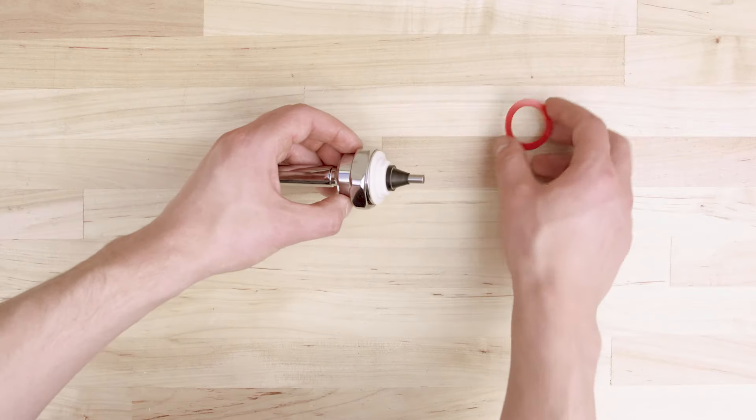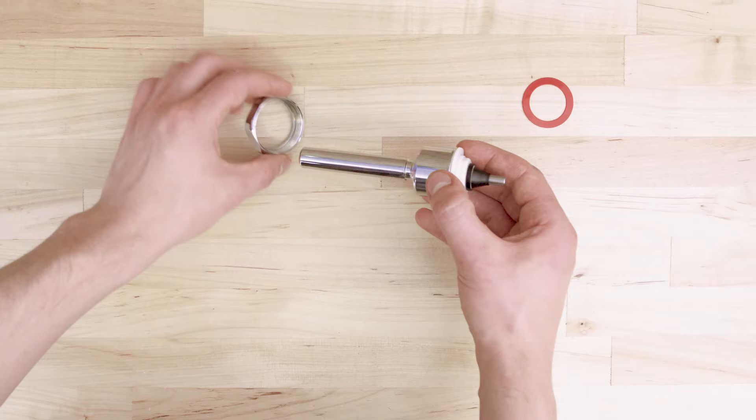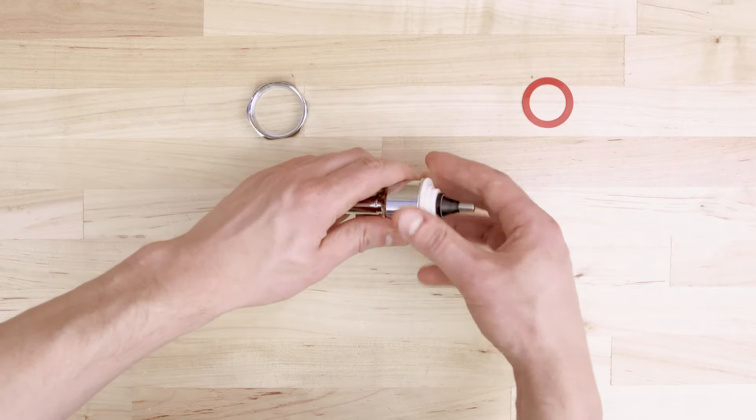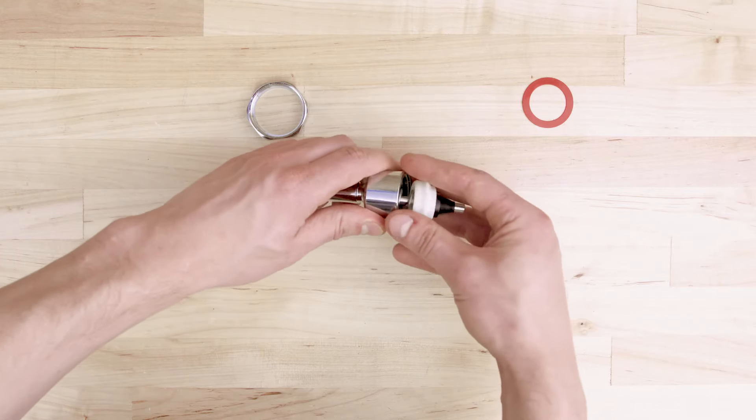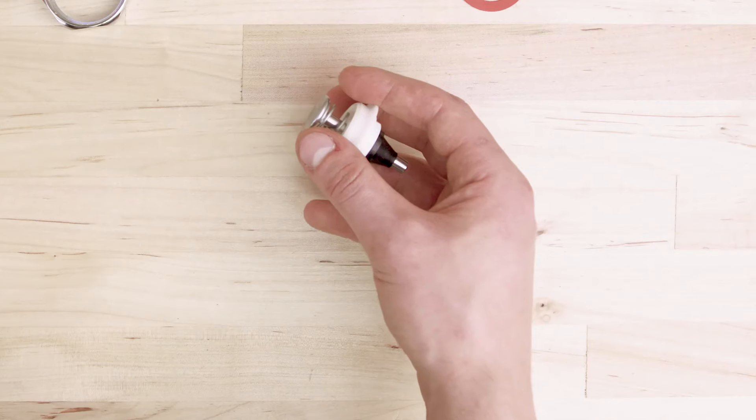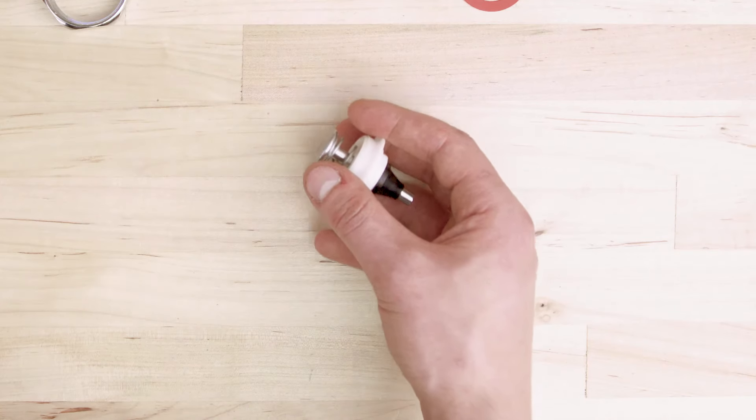First, disassemble the old handle. Slide off the handle coupling and gasket. Unscrew the socket and handle grip. Discard the old plunger, spring, bushing and seal.